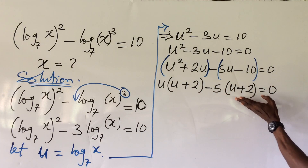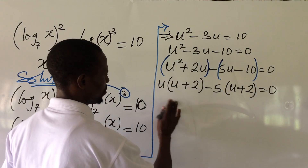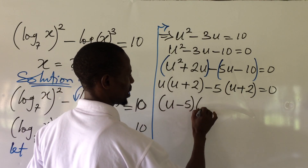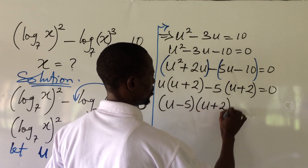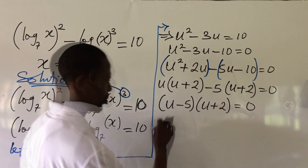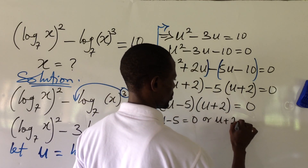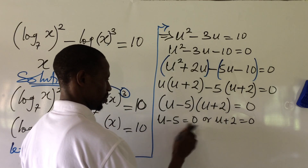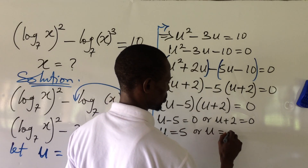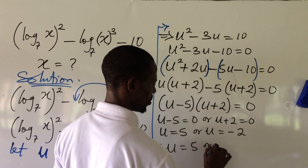We factor to get (u minus 5)(u plus 2) equal to 0. Applying the zero product rule: u minus 5 equal to 0, or u plus 2 equal to 0. Collecting like terms we have u equal to positive 5, or u equal to minus 2.